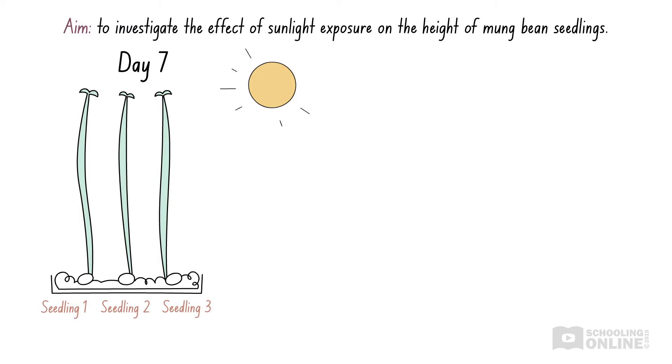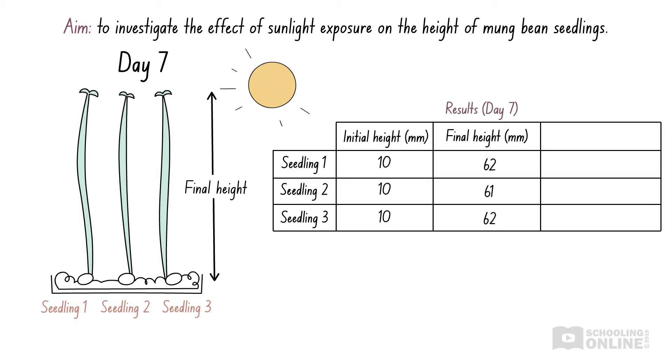After seven days, the final heights of the seedlings are measured using a wooden ruler. We can find the change in height of each seedling by subtracting its initial height from the final height. We can see that the changes in seedling height differ by a maximum of one millimetre over a seven day period.